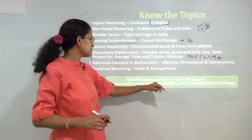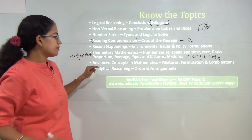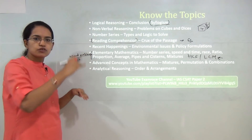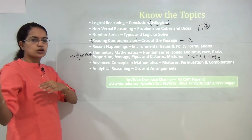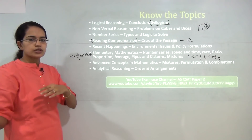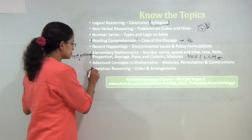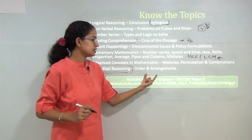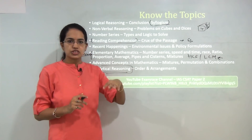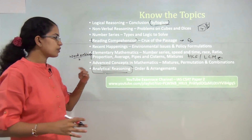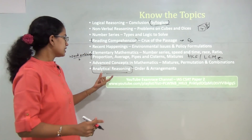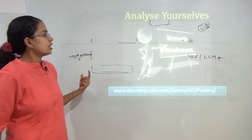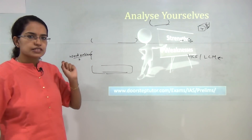There are some advanced concepts in mathematics like permutation and combinations and mixtures. Finally, questions related to analytical reasoning cover topics like ordering — for example, 'A is taller than B, B is taller than C, who is the tallest?' — as well as order arrangement, seating arrangement, blood relations, and direction questions.